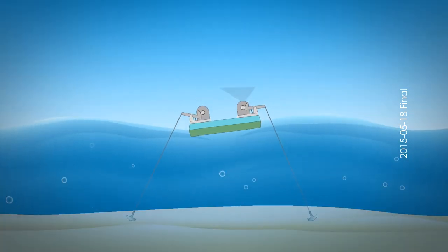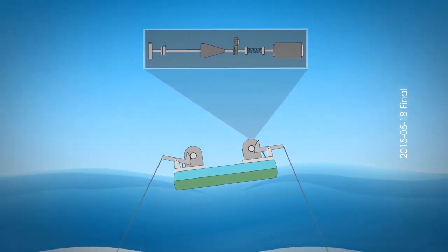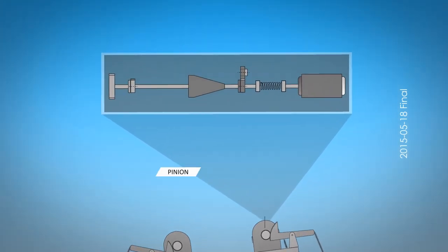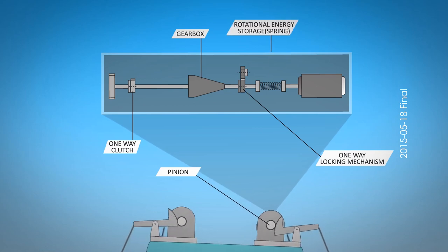The movement of a lever arm is coupled with a WEC unit. Each WEC unit consists of a one-way clutch gearbox, one-way locking mechanism, spring for temporary energy storage, and a generator.